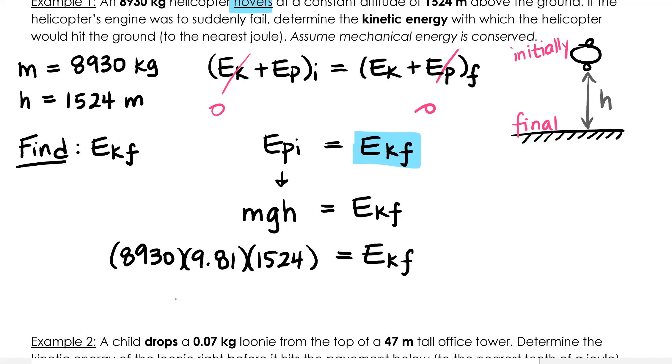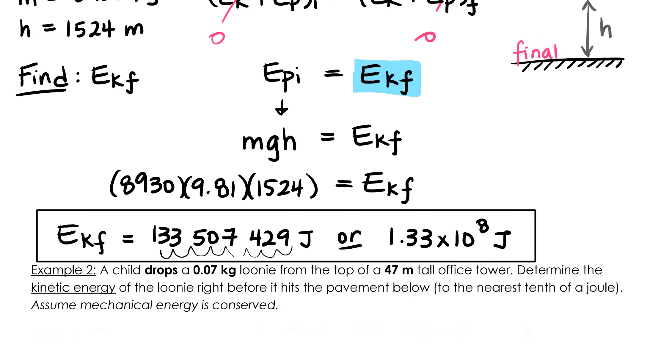Our final answer is going to be very large. You're welcome to express it in scientific notation if you'd like to. I'll give it in regular form and scientific so you can see both. EK final equals 133,507,429 joules. Or you can express it in scientific notation as 1.33 times 10 to the 1, 2, 3, 4, 5, 6, 7, 8 joules. And actually that 5 causes the 3 to round up, so it should be 1.34 times 10 to the 8 joules.